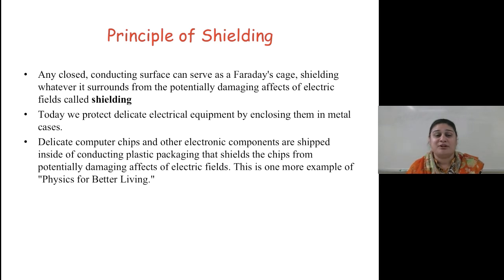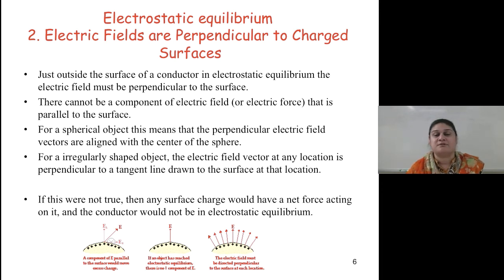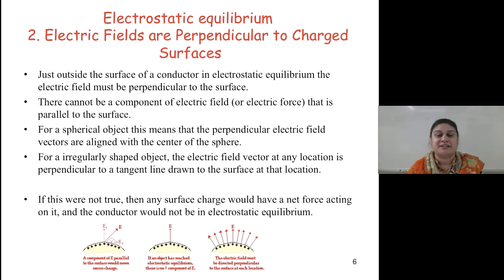This is an example of physics for better living. Electrical fields are perpendicular to charged surfaces. Just outside the surface of a conductor in electrostatic equilibrium, the electric field must be perpendicular to the surface — there cannot be a component of electric field or force that is parallel to the surface. For a spherical object, the perpendicular electric field vectors are aligned with the center of the sphere. For an irregularly shaped object, the electrical field vector at any location is perpendicular to the tangent line drawn to the surface at that location. If this were not true, any surface charge would have a net force acting on it and the conductor would not be in electrostatic equilibrium.